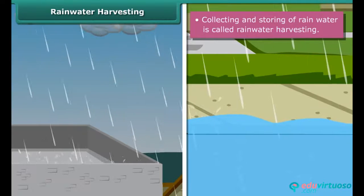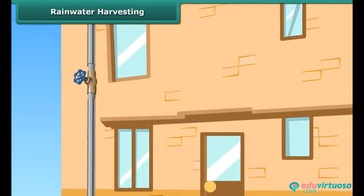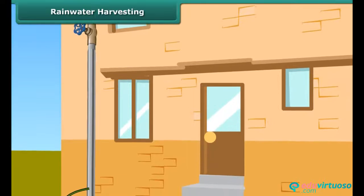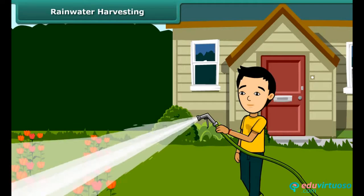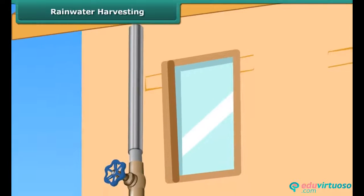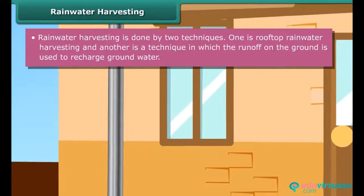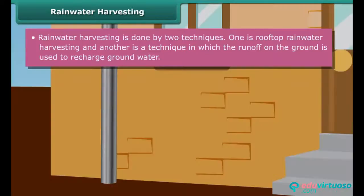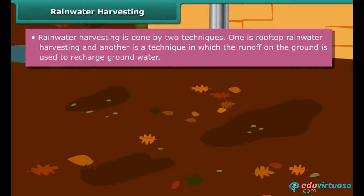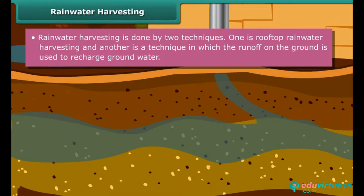The following are the techniques of rainwater harvesting. In one technique, rainwater is collected from the rooftop in a storage tank through pipes, to be used later for various purposes. Alternatively, instead of collecting the rainwater in a tank, the pipes can carry the rainwater to a pit dug in the ground. The rainwater then seeps into the soil to recharge or refill the groundwater. Another technique of rainwater harvesting uses the runoff on the ground to recharge groundwater.